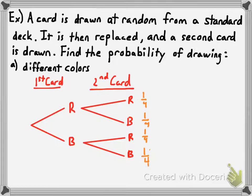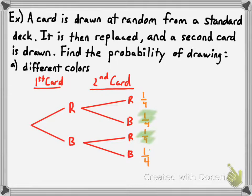The probability of drawing different colors corresponds to two outcomes: red then black, or black then red. We add those probabilities together and find that the probability of getting cards of different colors is one-half — which you might have guessed.